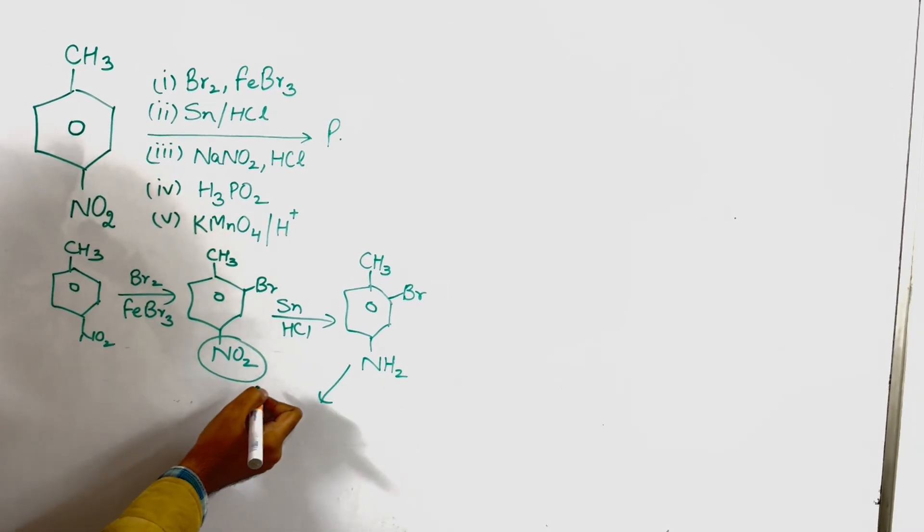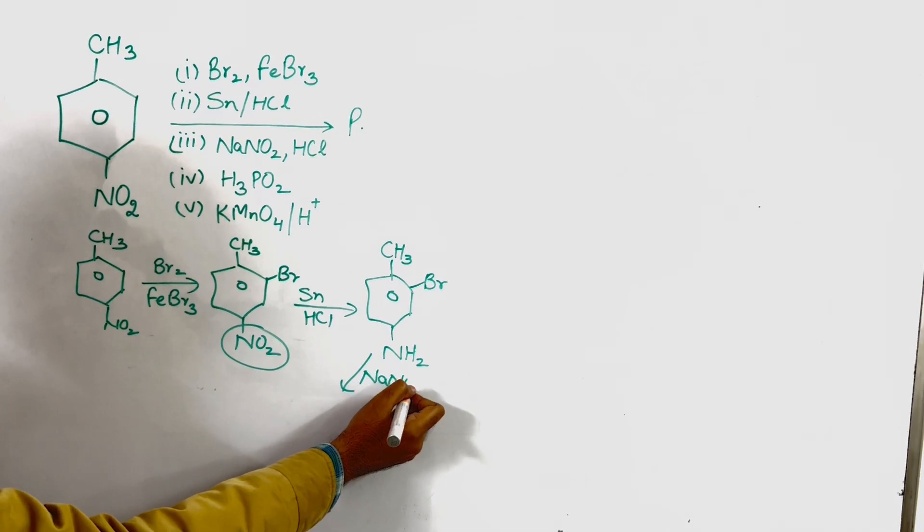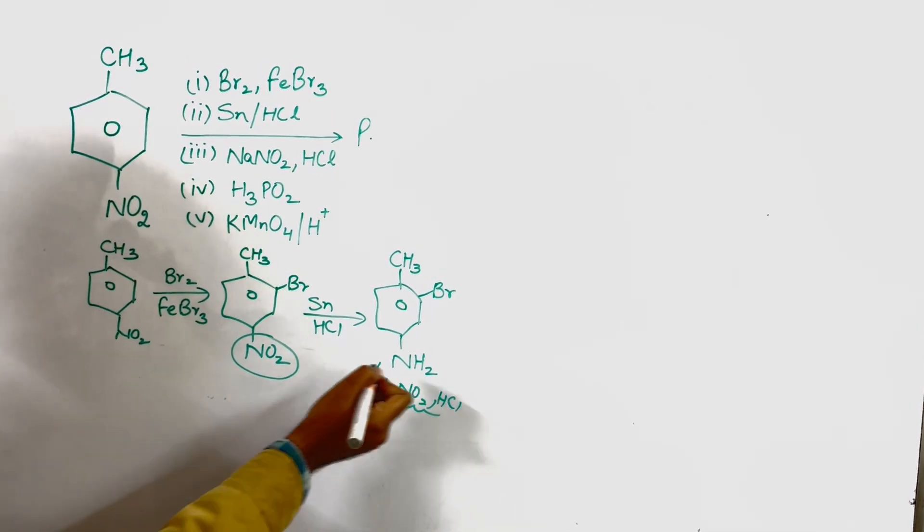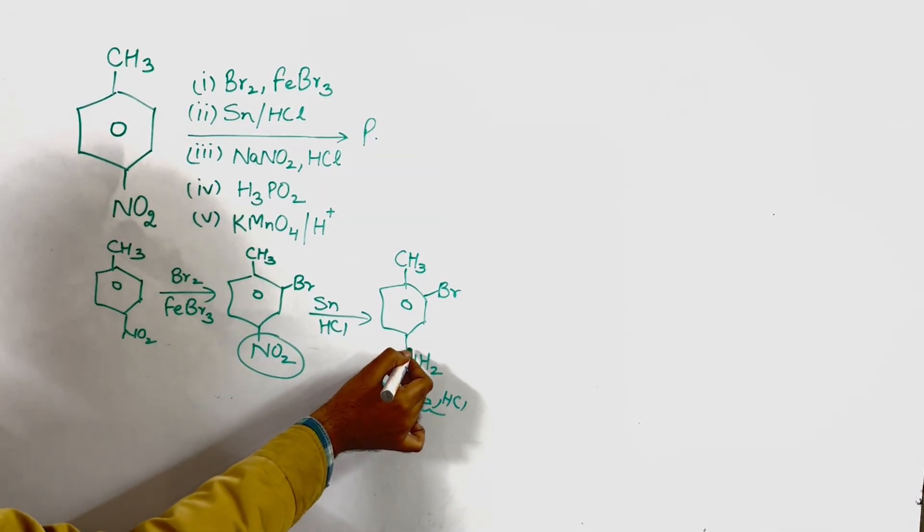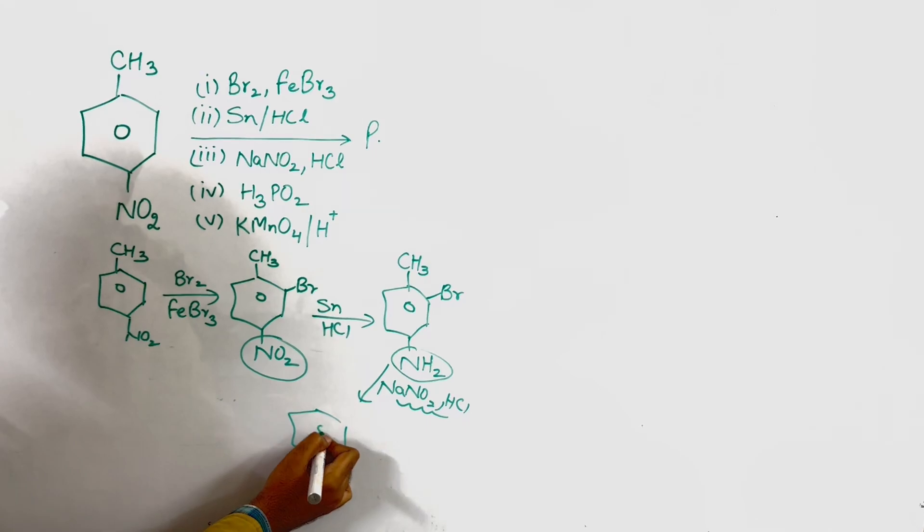Now the third condition is this compound undergoes these conditions, so these are the conditions for diazotization, so NH2 will be converted into diazonium ion.